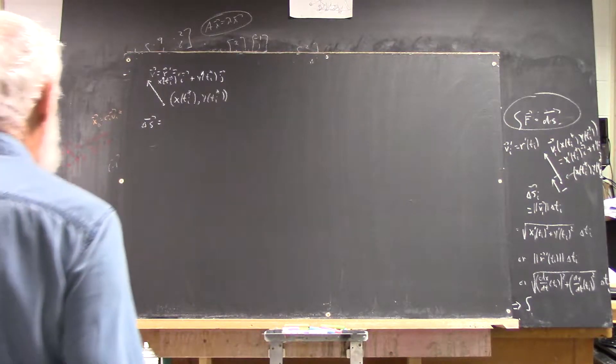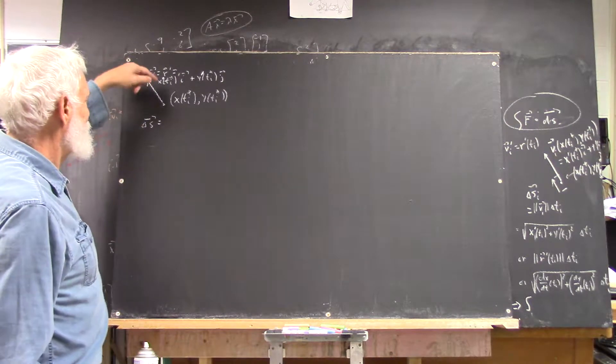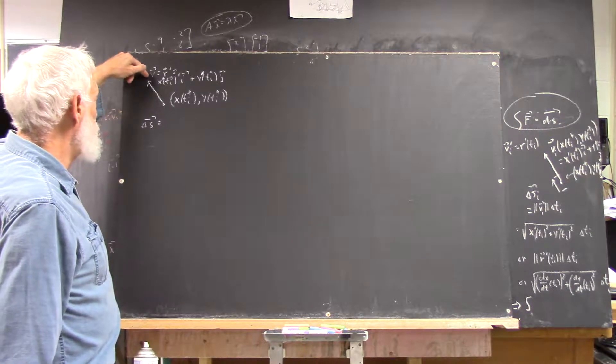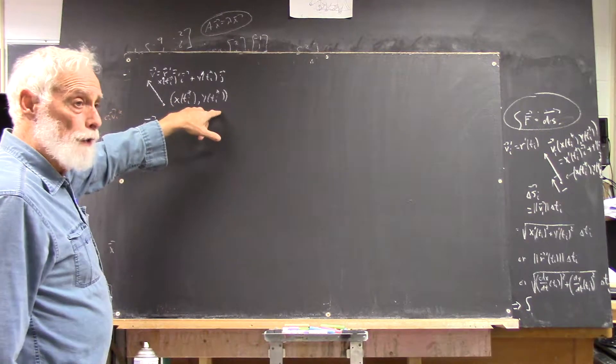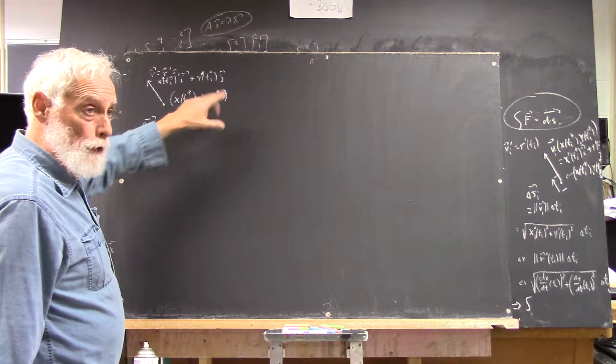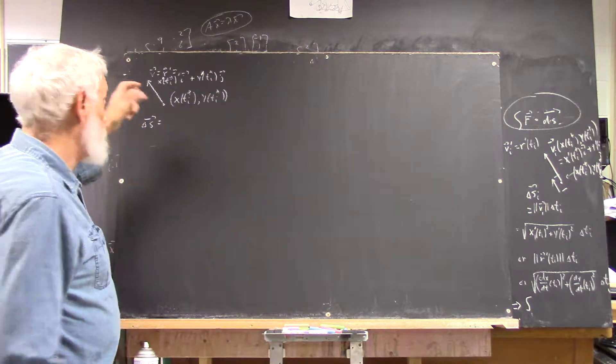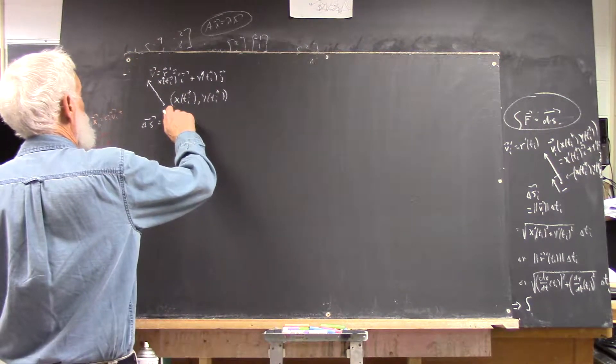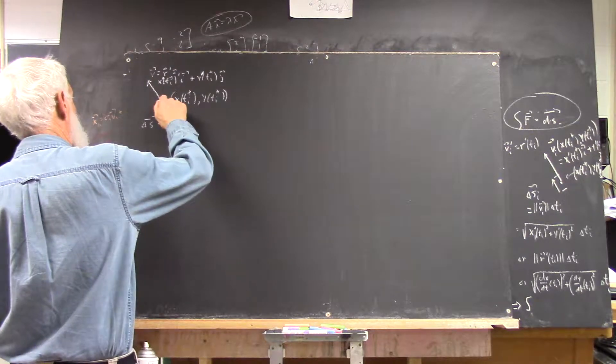We have this situation. I didn't write this very clearly, but you have your x of ti star, y of ti star, looking at your typical increment of your partition. So you want a delta s.